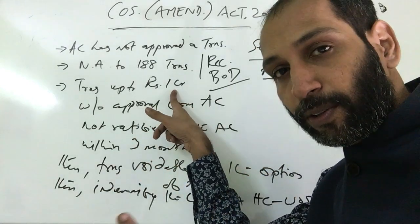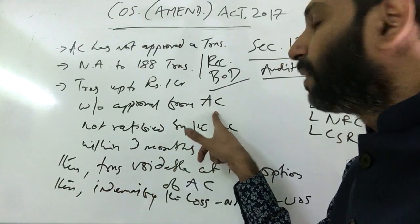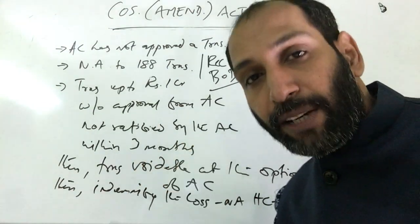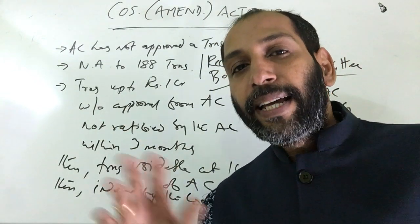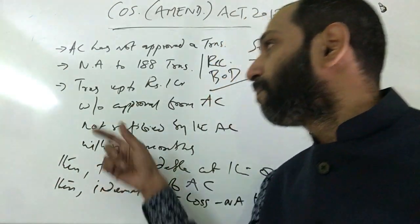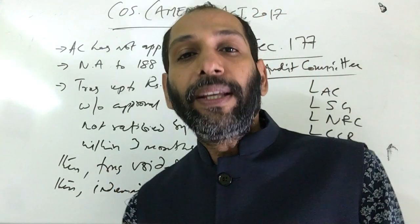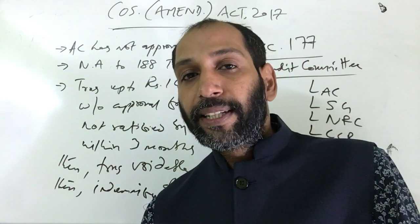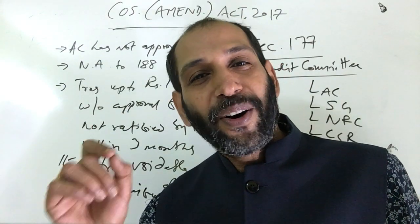The second amendment: if the amount of the transaction is up to rupees one crore — not above one crore — and the transaction is entered into without approval from the audit committee, then it must be taken up to the audit committee. If the audit committee is not approving or ratifying it within a period of three months, then that transaction will be voidable at the option of the audit committee. Earlier, voidability was at the option of the board; now, for transactions up to one crore, this important power is vested with the audit committee.